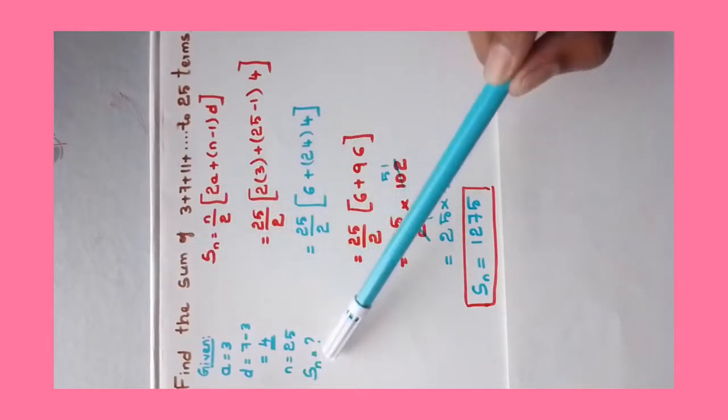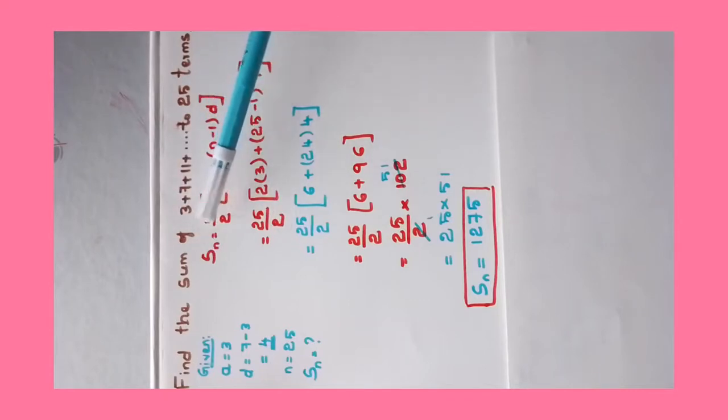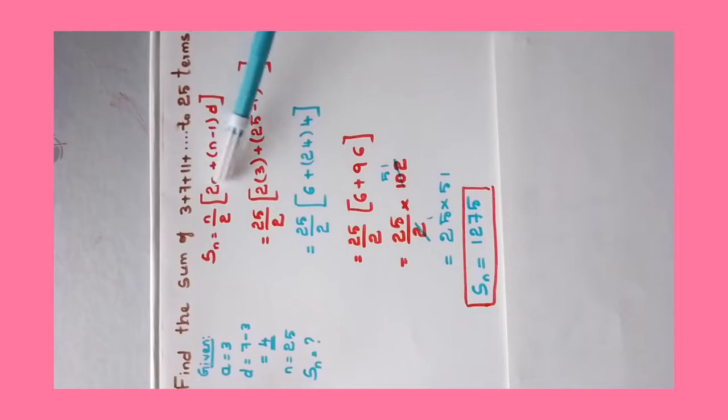We know when Sn is asked with the remaining terms given, the formula is Sn = n/2[2a + (n-1)d]. Substitute the values: n = 25 ÷ 2, 2 of a is 3, n - 1 = 25 - 1, d value is 4. Bring back this 25/2 as it is, 2*3 = 6, 25 - 1 = 24, times 4.